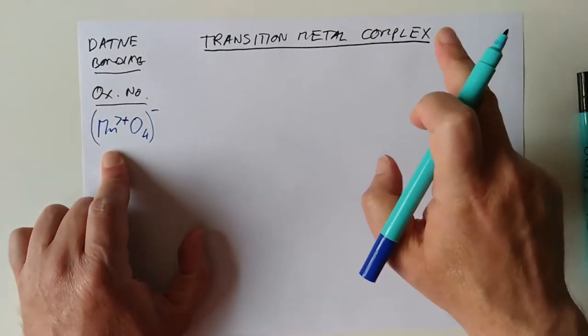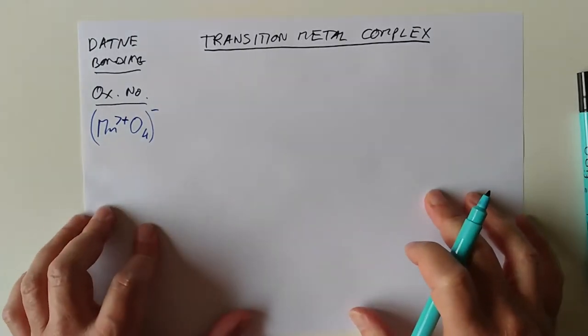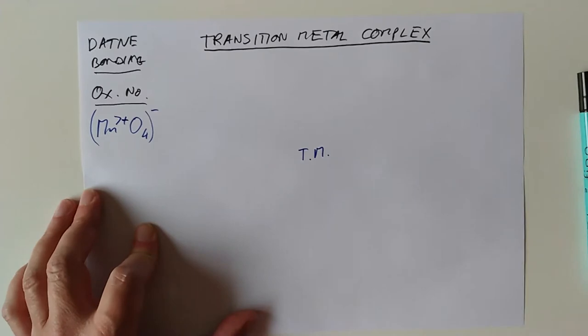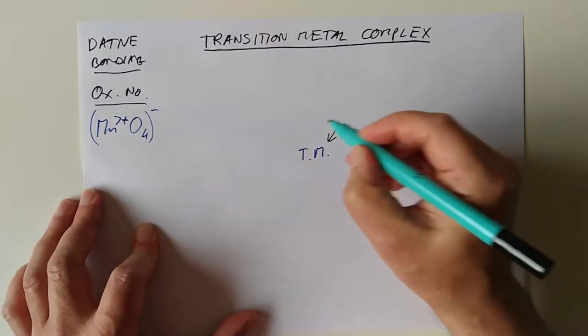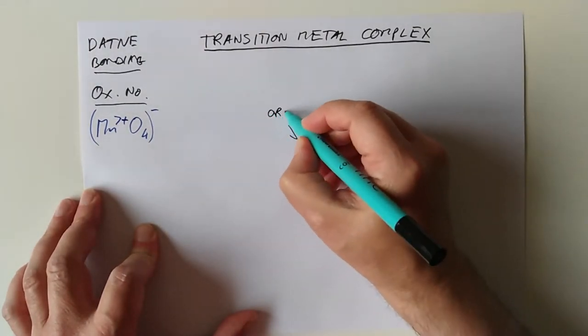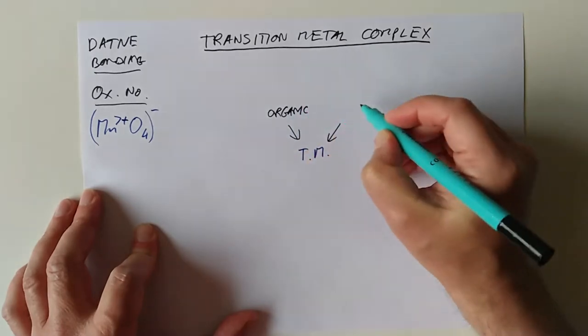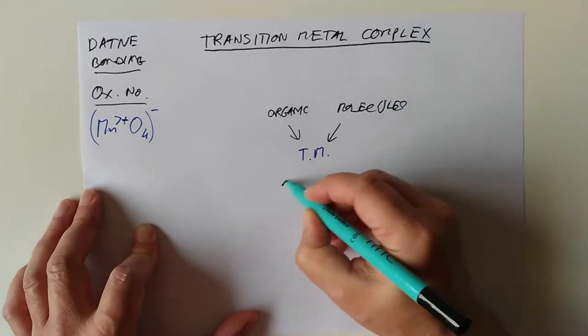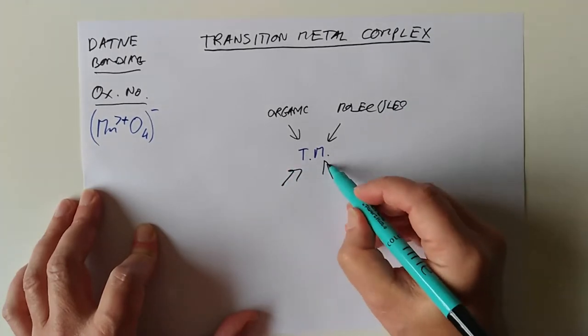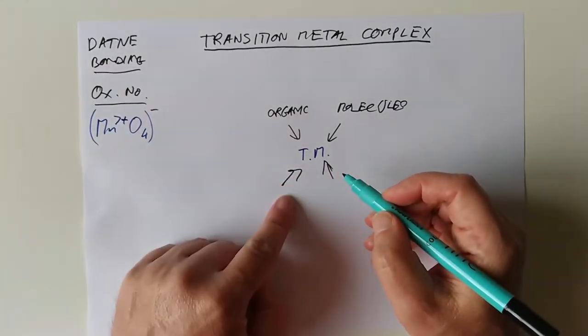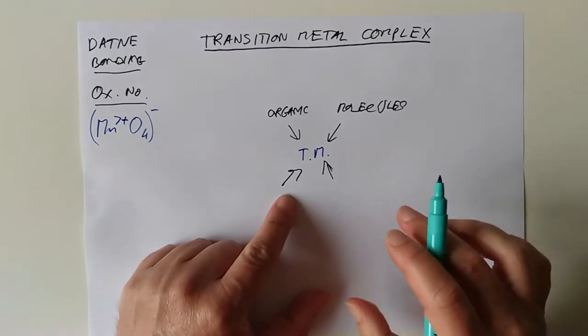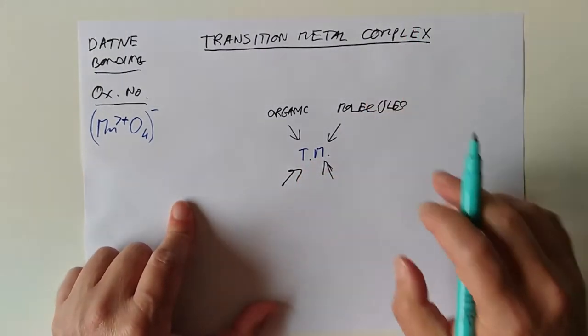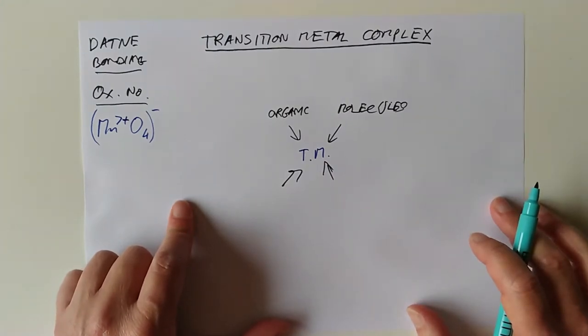Because in fact, that is an example of this. So a transition metal complex has a center transition metal ion, and attached to it are a variety of organic molecules. And they attach to the transition metal, of course, by dative bonds. And the oxidation number on the transition metal can change the property of this complex.